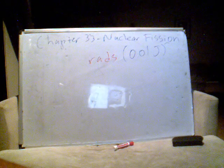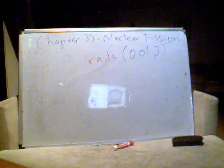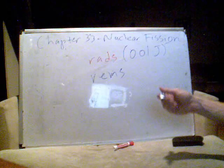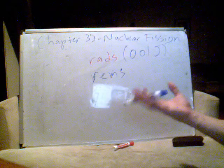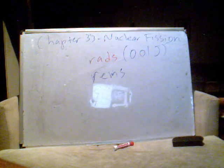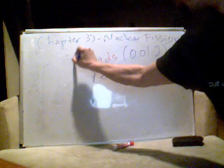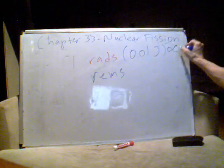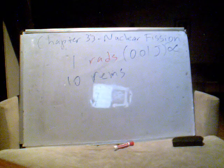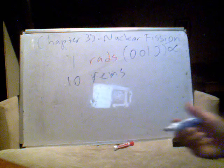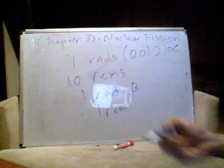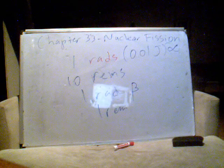And if we take the physiological effects into account, radiation dosage is measured in these funny things called REMs. Not terribly unlike the kind of sleep cycle that you need to get in order to feel rested. Now, one rad of alpha radiation is ten REMs. But one rad of beta radiation is only one REM of radiation dosage.